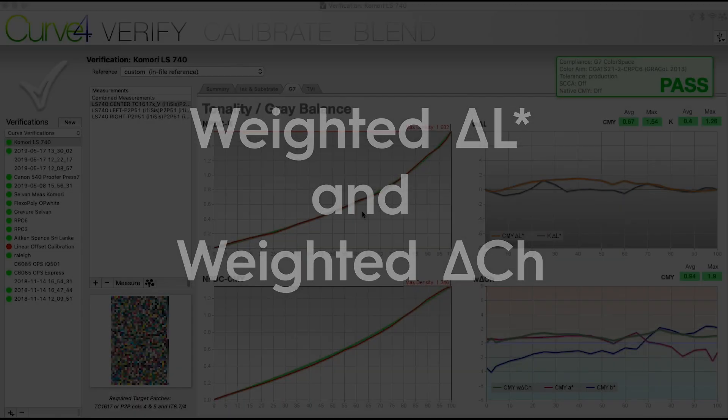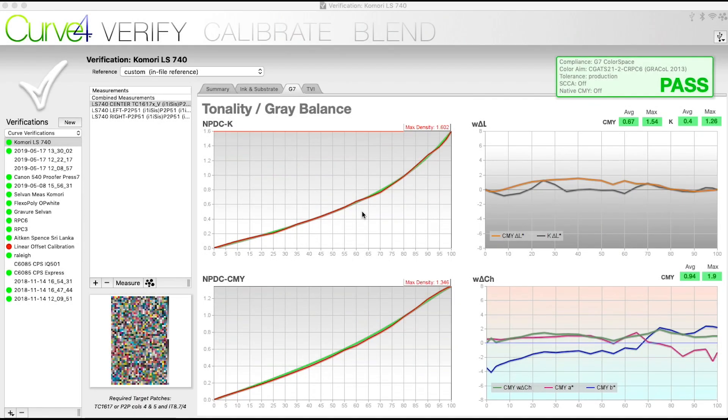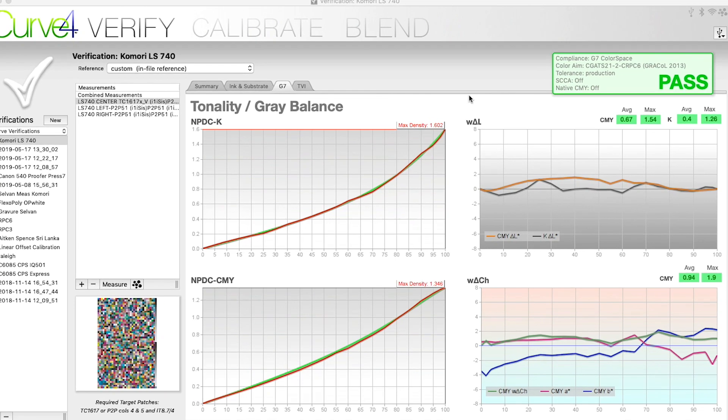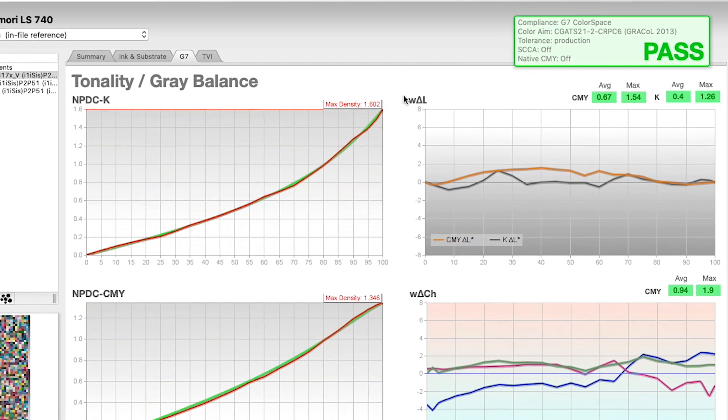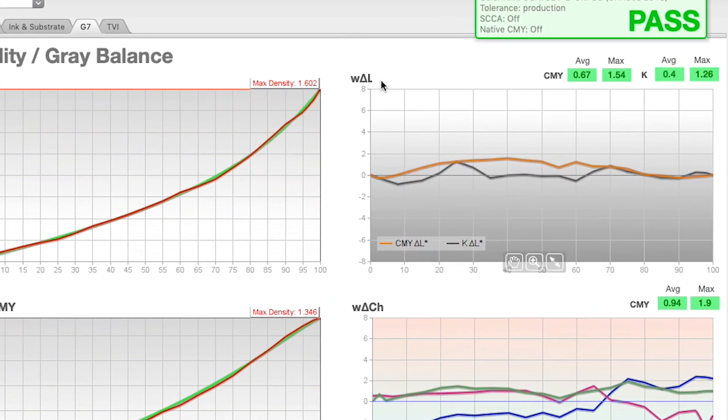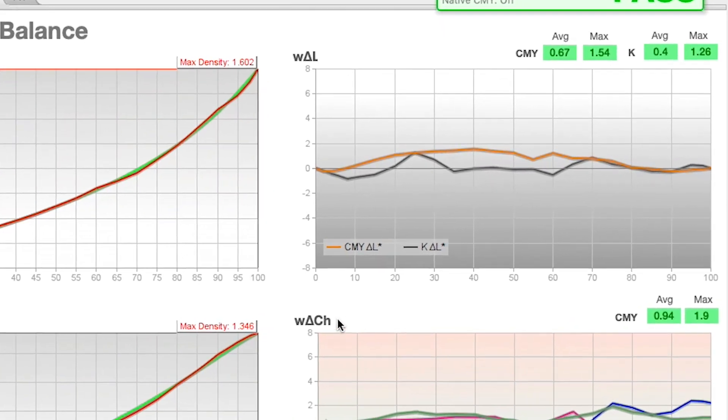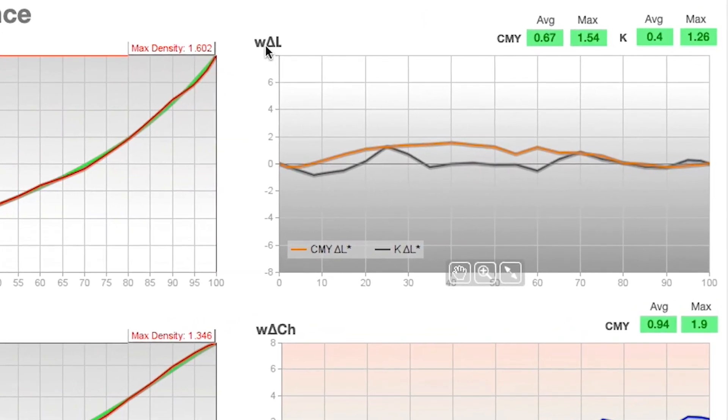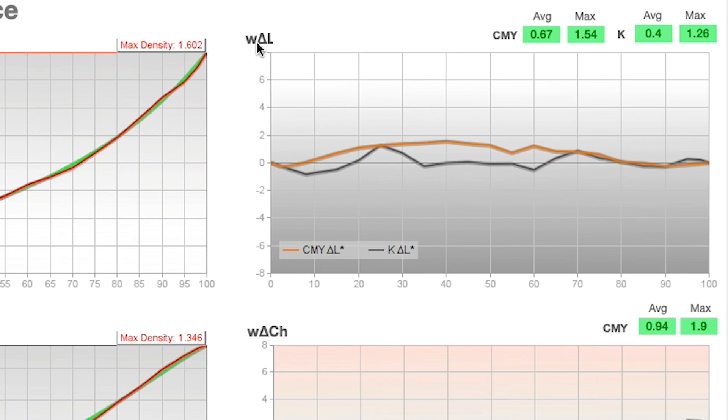Here we're looking at Curve4 and over on the right-hand side of this window you can see weighted delta L and weighted delta CH. Weighted delta L is looking at how accurate your tonality is—tonality, again, that is how dark or light something is. When we're looking at those gray ramps that I showed you earlier, one may be darker than the other, so that will be reflected in the measurement data when we look at weighted delta L.